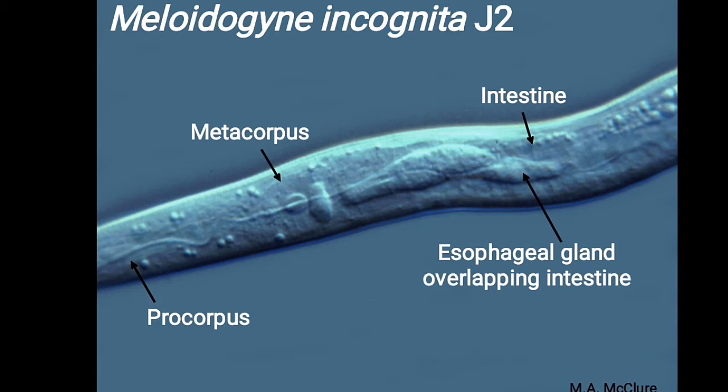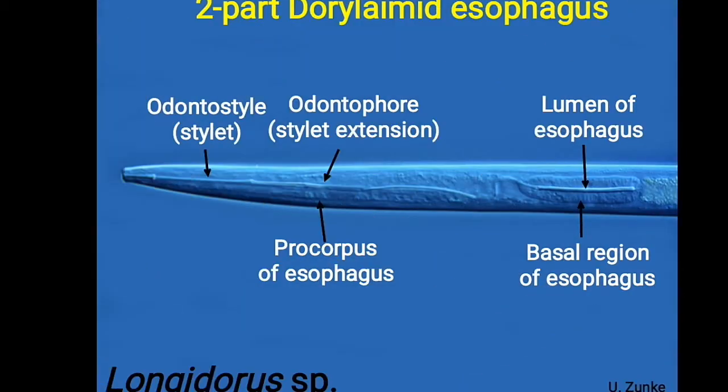Next, about the two-parted dorylaimid esophagus: it has an odontostyle, which is the stylet, and an odontophore, which is the stylet extension. It has only two regions: a procorpus and a postcorpus.